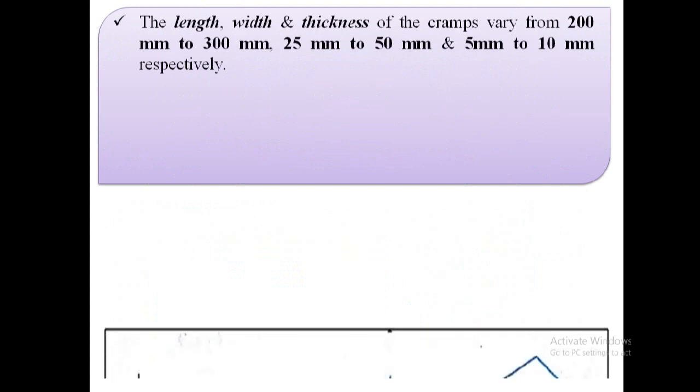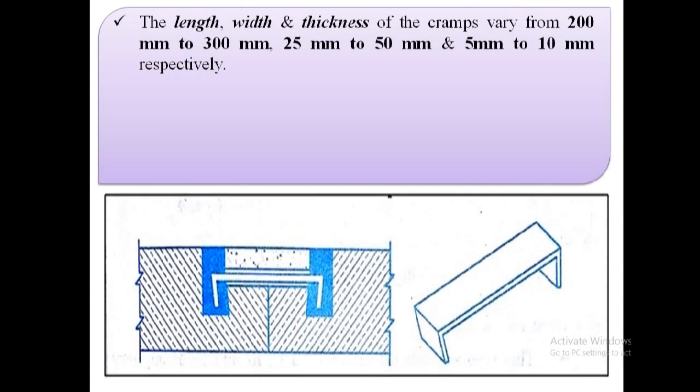The length of cramps vary from 200 mm to 300 mm. Width of cramps vary from 25 mm to 50 mm, and thickness of cramps vary from 5 mm to 10 mm.